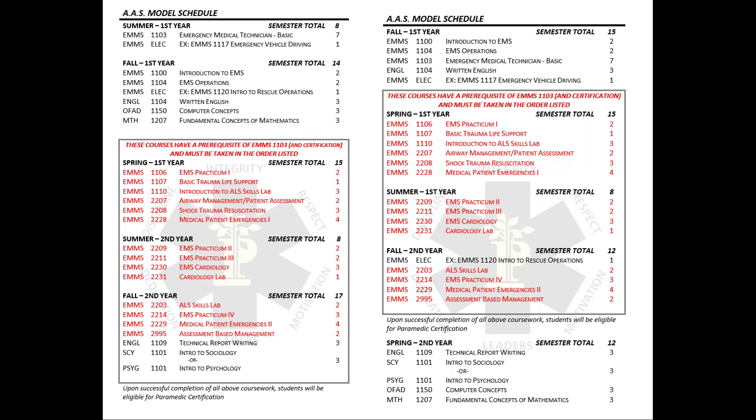The only challenging semester, as you can see within those model schedules, is spring of the first year — that's 15 credit hours no matter what. So trying to take another class and being at 18 hours would require an override, as that's beyond your max hours, and the same applies in the summer. Generally, fall of the second year and fall of the first year provide a little bit of flexibility in scheduling.